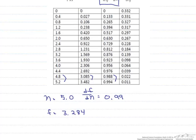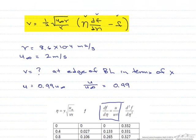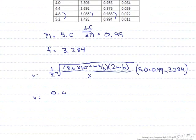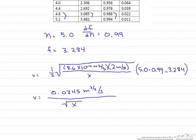So now that we have all of our values, all we have to do is go back to our original equation and put in everything that we know. Our v is going to equal 0.0345 meters to the three-halves per second divided by the square root of x.